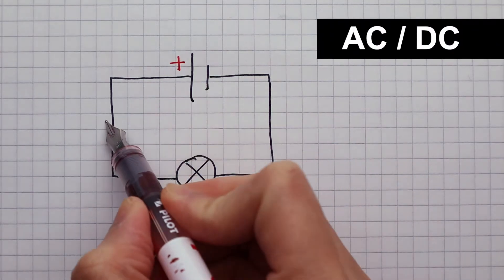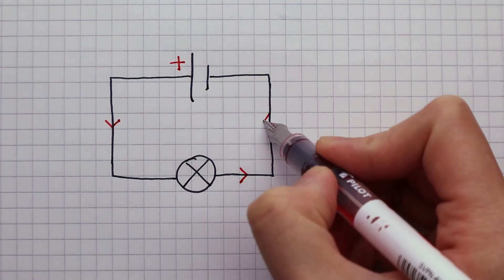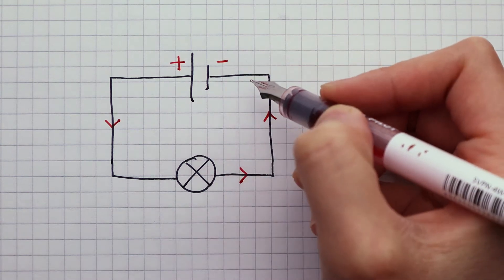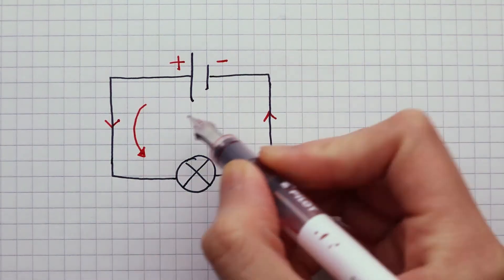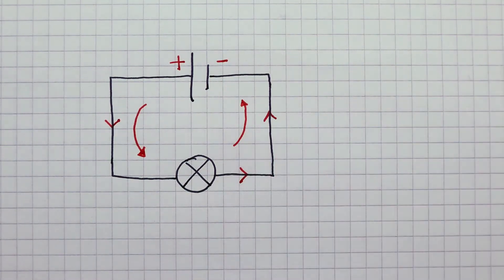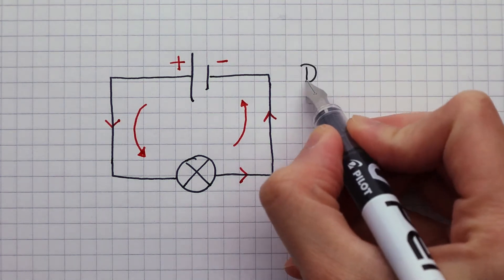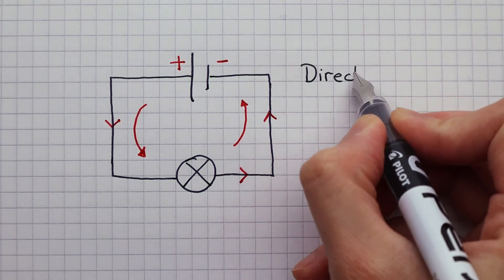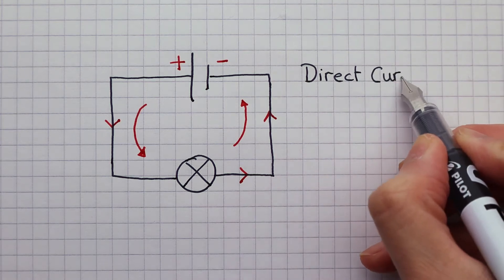The current from a cell goes from the positive terminal all the way around to the negative terminal. It continues to move around the circuit in a single direction. We call this type of current a direct current, or DC current, if it does not change direction.